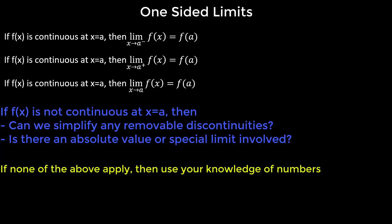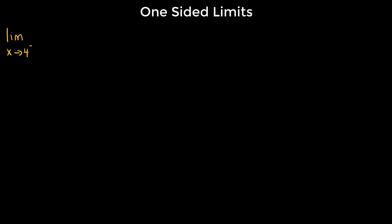Let's begin with an example for a continuous function. Suppose we're computing the limit as x approaches 4 from the left of 2x + 3. We know that 2x + 3 is completely continuous, so the limit as x approaches 4 from the left — since there's continuity at 4 — we just plug in 4: 2 times 4 plus 3 equals 8 plus 3, which is 11.